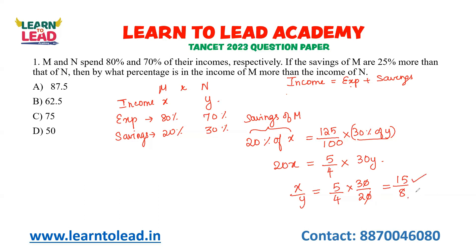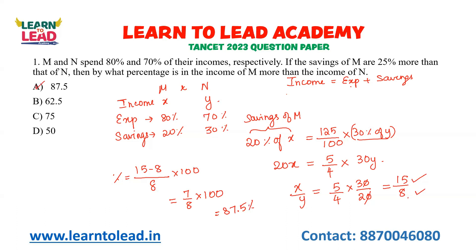X is 15 parts and Y is 8 parts, so X equals 15 rupees and Y equals 8 rupees. The question asks what percentage is the income of M more than N. So we compute (15 minus 8) by 8 into 100, which is 7 by 8 into 100, giving 87.5%. You should have good knowledge of partnership and percentage ratio.